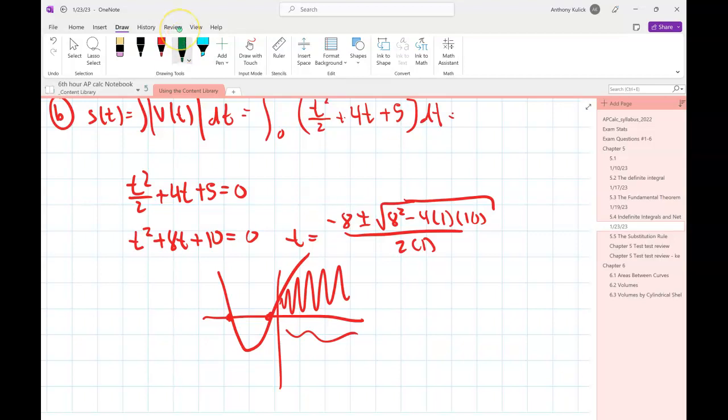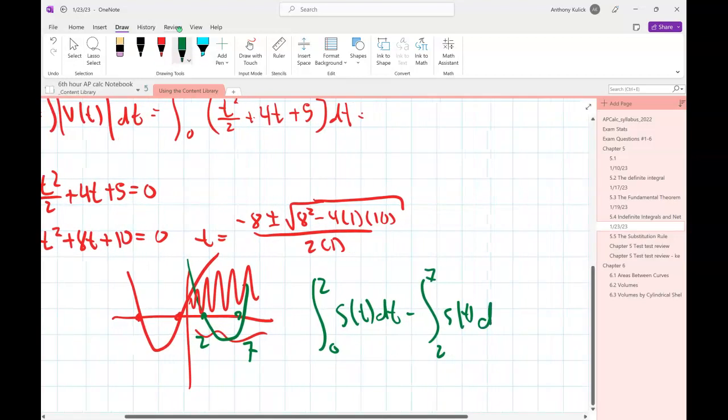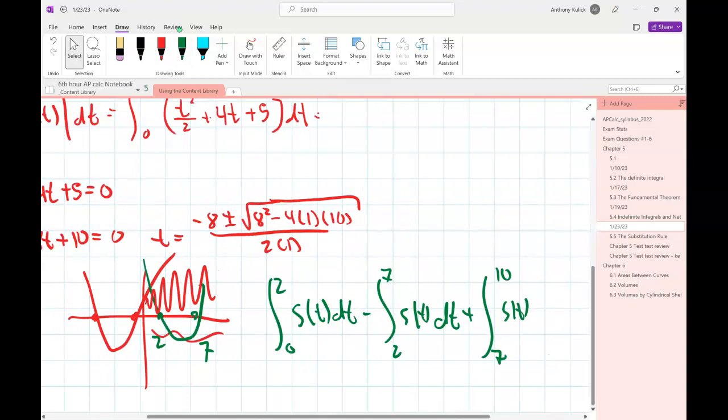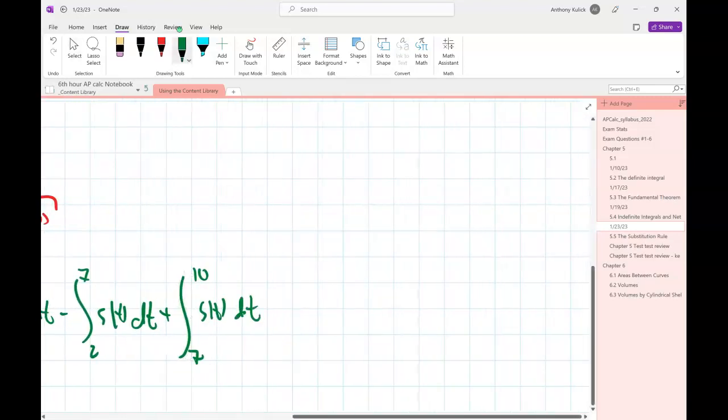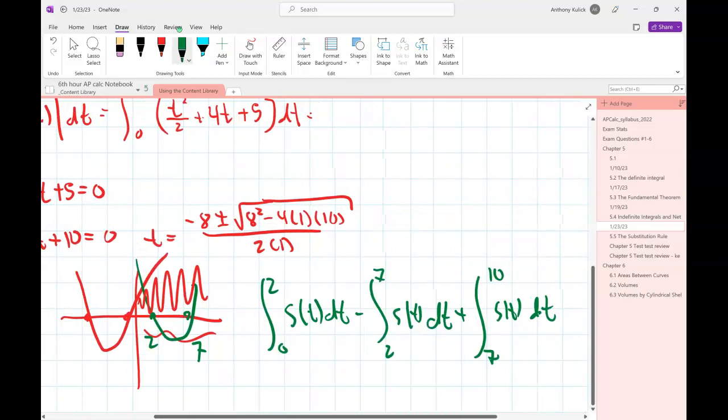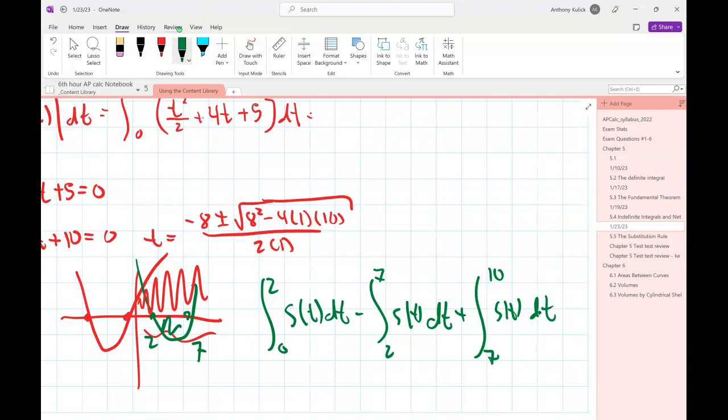So let's say that it did this, right? And we'll just say that's 2 and 7 or something. So I would integrate from 0 to 2. And then I would do, instead of adding that, I would do minus 2 to 7. So that's going to negate the part that's negative to make it positive. And then 7 to 10. So I'm just going to break it apart so that I can make sure that the part that's negative here is accounted for. So that's the trick.